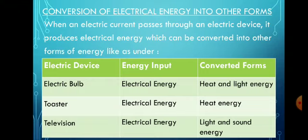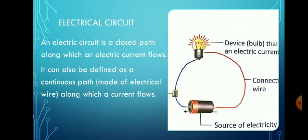Number one: an electric bulb uses electrical energy as input and produces heat and light energy. Similarly, when we give electrical energy to a toaster, it gives us heat energy and helps toast the bread. Next, the television converts electrical energy input into light and sound energy. These are three examples showing the conversion of electrical energy into other forms — there could be many more that you can find around yourself.